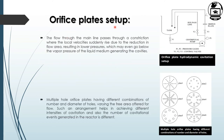In the orifice plate setup, the main line flow suddenly encounters a constriction. The flow area is reduced, causing velocity to increase and pressure to decrease, potentially falling below the vapor pressure of the liquid medium. As a result, cavities start forming. The setup includes a centrifugal pump, a main bypass line, control valves, pressure gauges, an orifice plate, and a tank.